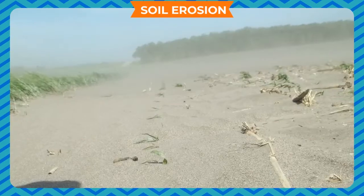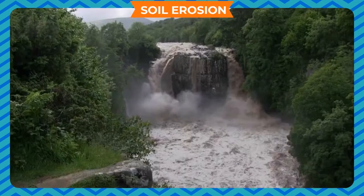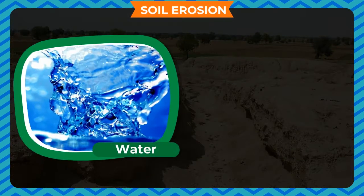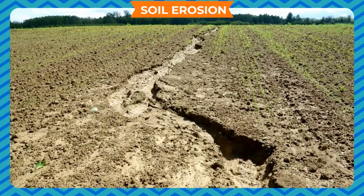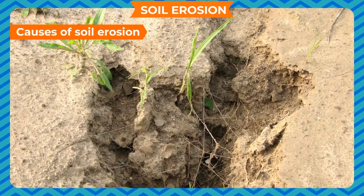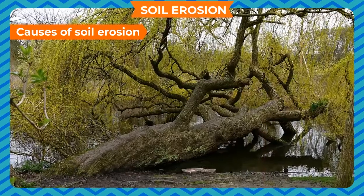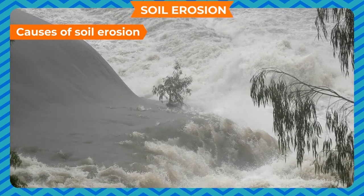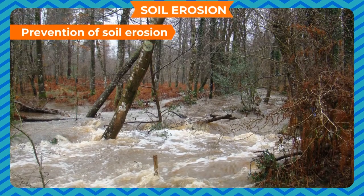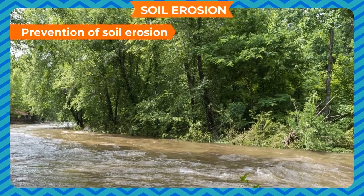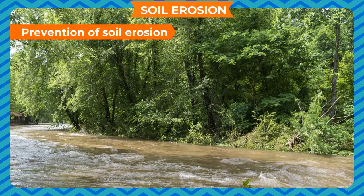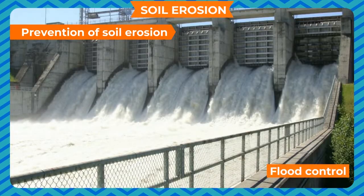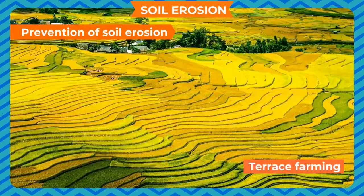Soil erosion: The topsoil can be carried away easily by wind or washed away by flowing water. This process is called soil erosion. Causes include overgrazing by animals, large-scale cutting of trees, deforestation, improper farming practices, heavy rains or floods, and forest fire. Prevention includes growing more trees through afforestation, flood control, allowing restricted animal grazing, and following terrace farming.